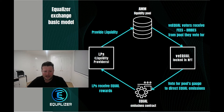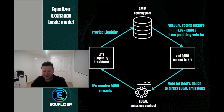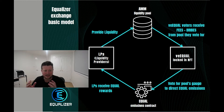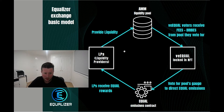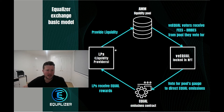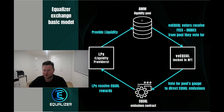Liquidity providers — or liquidity on the platform — to give you some simple examples would be something like Ethereum/USDC or Fantom/USDC. Those two combined in a pool together as a pair are of even weight, so there's a 50/50 mix of both, and they're what are used to do the swaps in a decentralized exchange. You provide this liquidity, it comes into the automated market maker, and then the swaps occur from there.